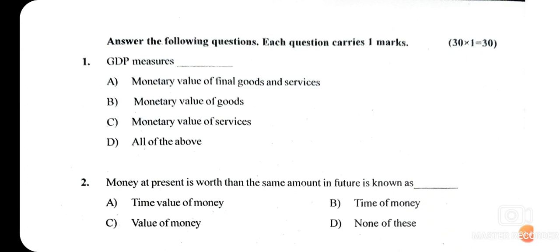Let us start with the first question: GDP measures dash. As we know, GDP stands for Gross Domestic Product, which is the total monetary value of all finished goods and services produced within a country's borders in a specific time period. The right answer is option D — all of the above — because it includes monetary value of final goods, monetary value of goods, and monetary value of services.